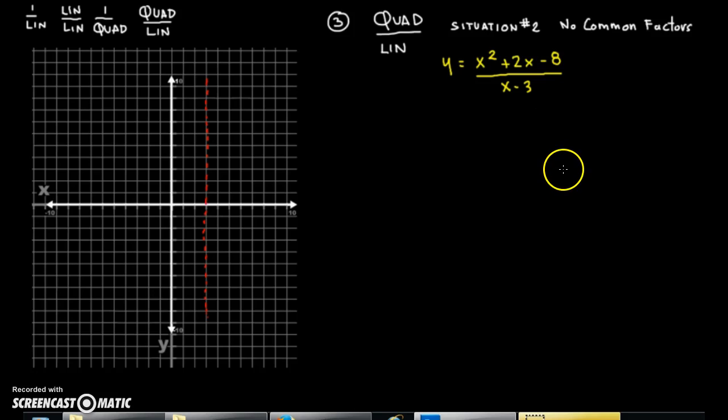We're now at situation number 2 where we have no common factors. What you'll notice is that if I take this equation, x squared plus 2x minus 8 divided by x minus 3, if I had to factor that top part out, I'm going to end up with an x plus 4 and an x minus 2. I'm going to divide the whole thing by x minus 3. So nothing's going to cancel out in this situation, but I can still figure out quite a few things. I do know that because of the denominator being x minus 3, that x cannot equal 3. And therefore, this is giving me my vertical asymptote.